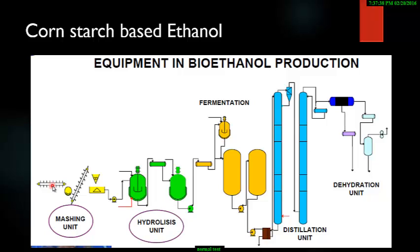There are two processes in starch hydrolysis: the wet milling process and the dry milling process. In the wet milling process, dilute H2SO4 is added to the corn mash, which is then left for 24 to 48 hours. In dry milling, grains are ground into powder and then separation is carried out by machines.